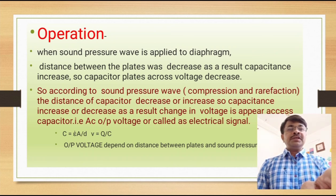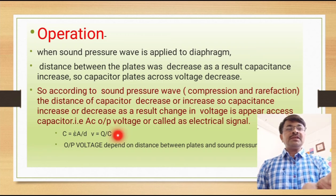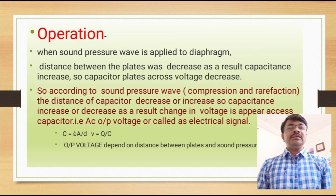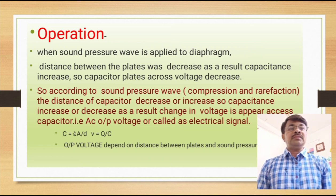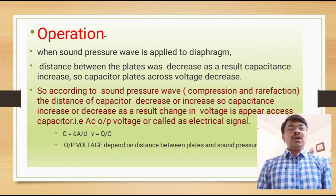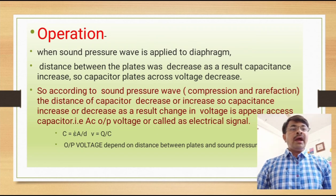So when the distance between the plates decreases, capacitance increases. We know that a sound pressure wave contains compression, meaning high pressure, and rarefaction, meaning low pressure. Such sound waves applied to the diaphragm cause the distance of the capacitor to decrease or increase — it changes. So the capacitance also changes. As a result, a change in voltage appears across the capacitor, and this change in voltage is the AC output voltage — the electrical signal. The output voltage depends upon the distance between the two plates and the sound pressure waves.